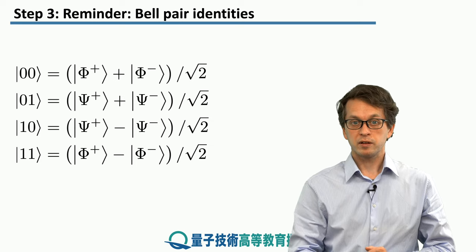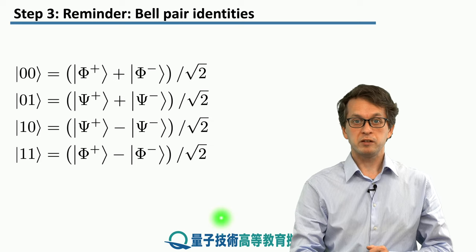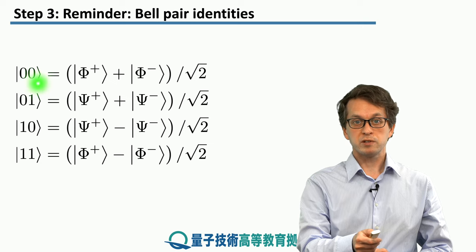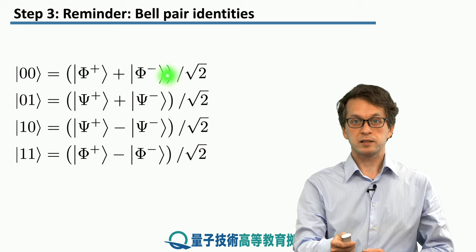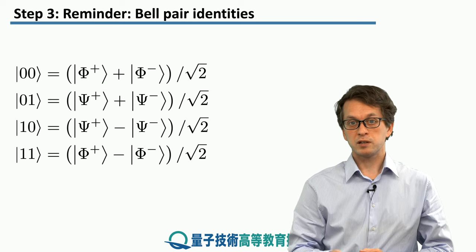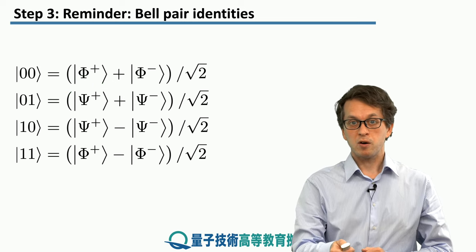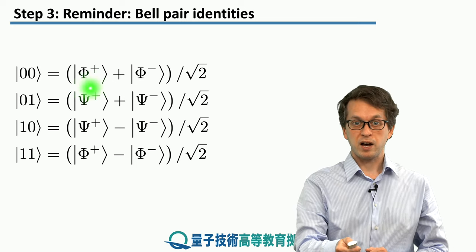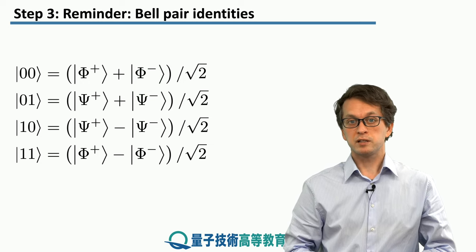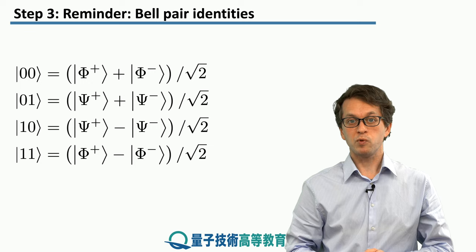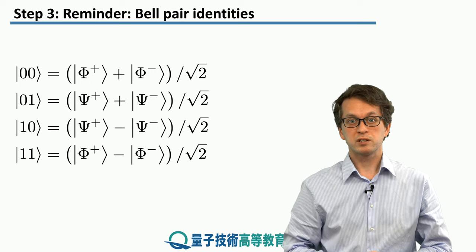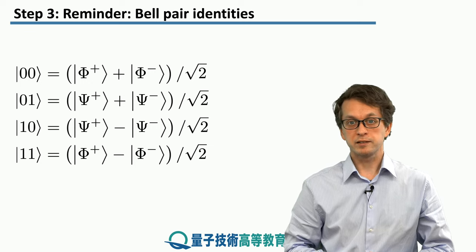In the next step, the following identity will be very useful. We can rewrite the state |00⟩ in the Bell state basis. You can check for yourself that |00⟩ is just the sum of the maximally entangled states phi-plus and phi-minus. Similarly, we can do it for the other states |01⟩, |10⟩, and |11⟩ — they are just different combinations and superpositions of the four Bell states.